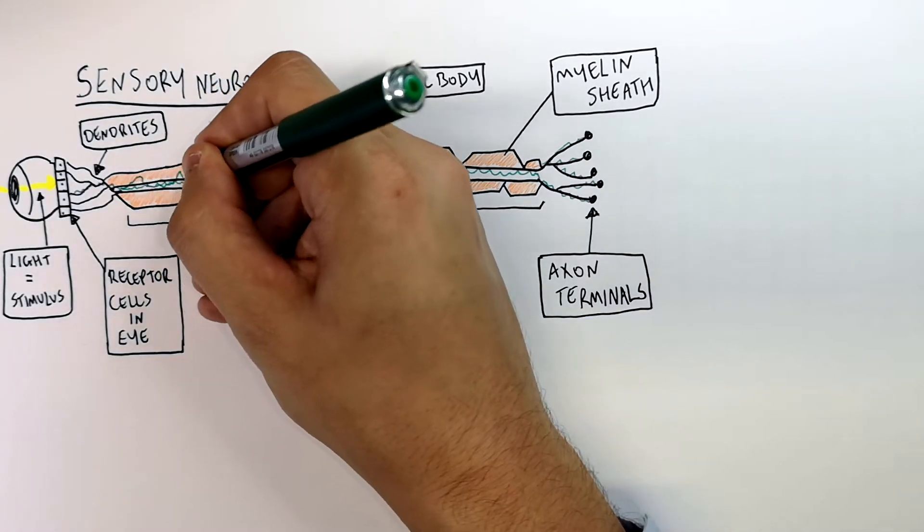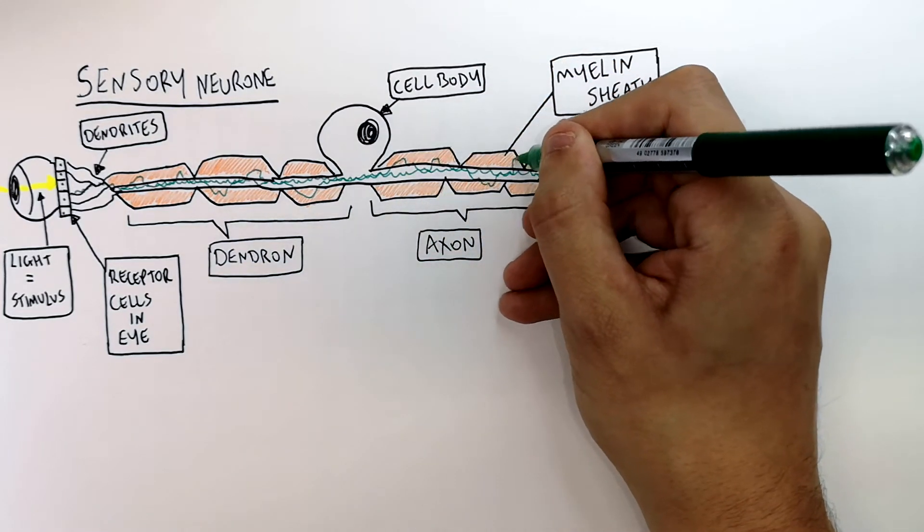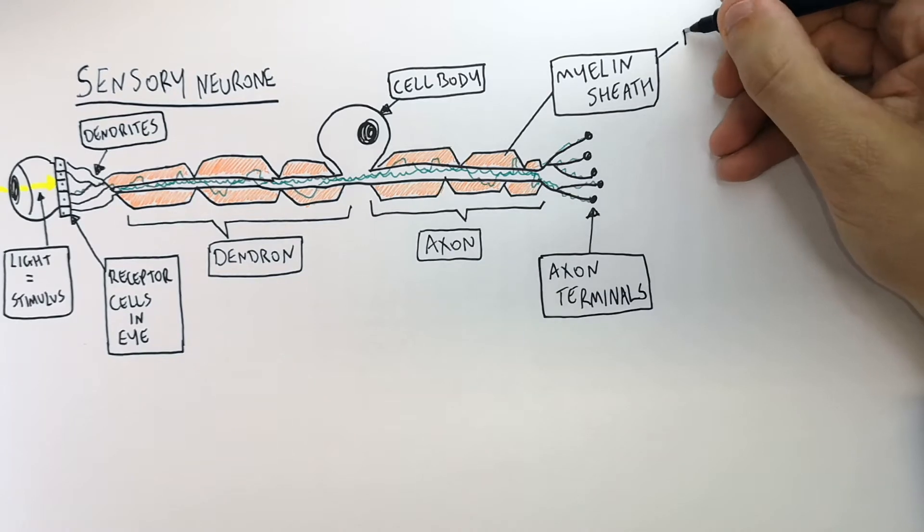So as you can see here the electrical impulse without the myelin sheath would be lost out of the neuron, but the myelin sheath insulates it keeping the electrical impulse in the neuron.